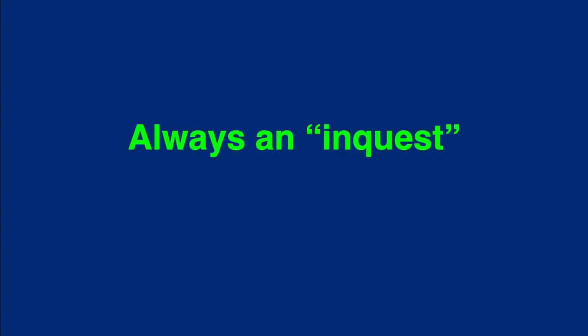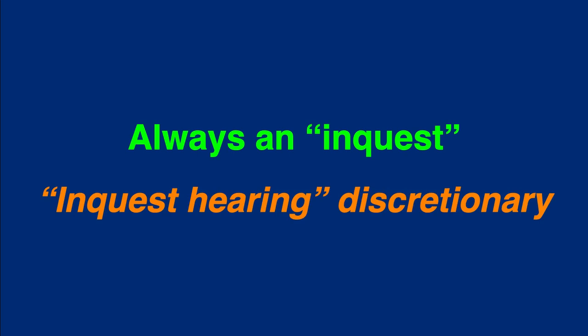The next term is inquest hearing. An inquest hearing is a formal court hearing held to determine whether the death of a person was caused by an unlawful act or omission, and if the death was caused by an unlawful act or omission, to obtain evidence to form the basis of a criminal prosecution. Remember, whenever a person dies and the death meets certain requirements found in the Code of Criminal Procedure, there must always be an inquest conducted. An inquest hearing is not required and is conducted at the medical examiner or justice of the peace's discretion.